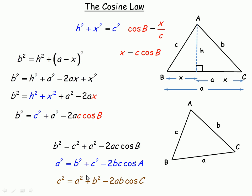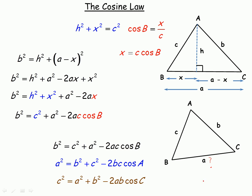Before we get into examples, to use the cosine law to find a side — say side c — you need to know the other two sides a and b, and the angle between them, which is angle C, the angle opposite the side you're finding. So in order to use the cosine law to find any side, you need to know the other two sides and the angle between them.